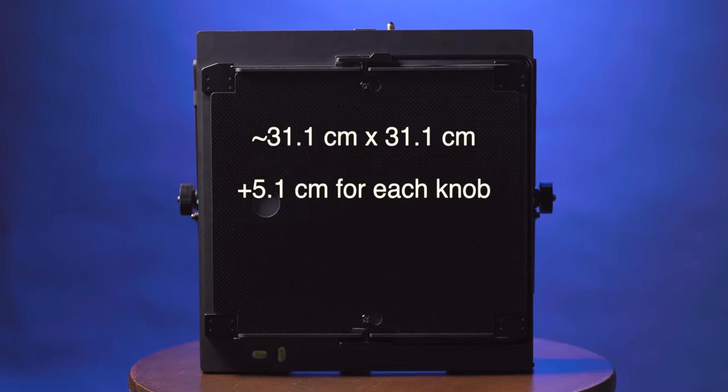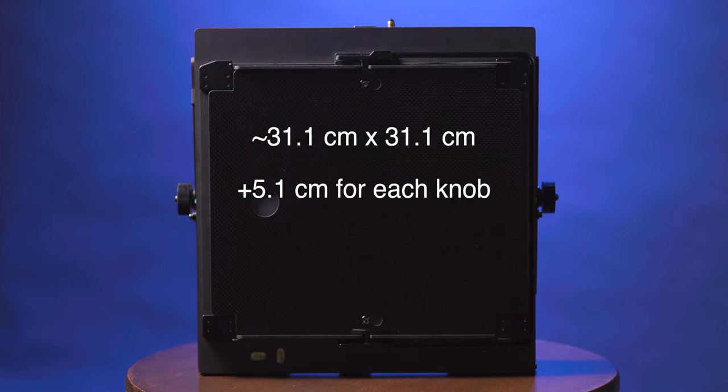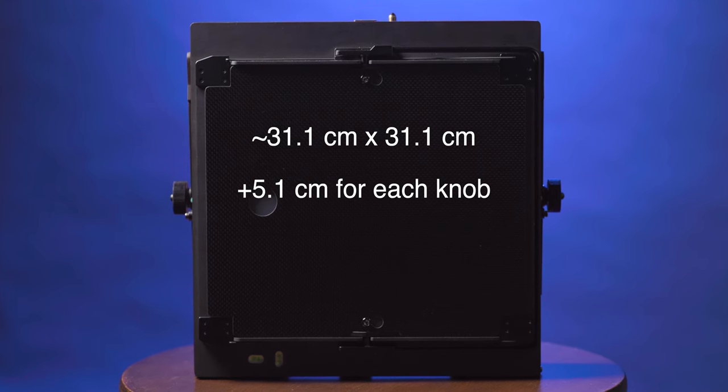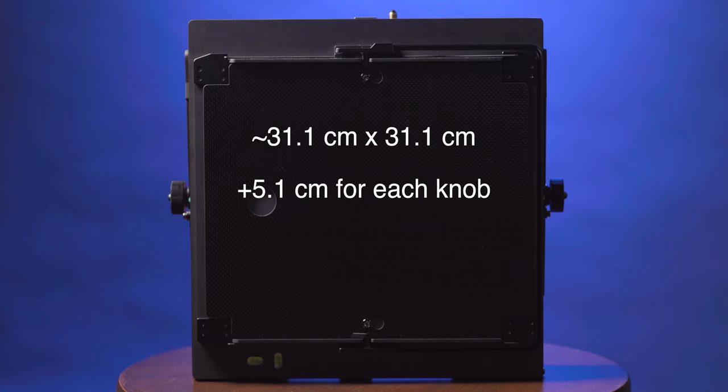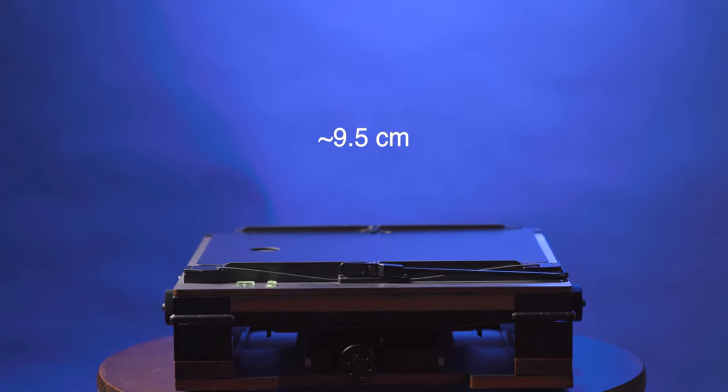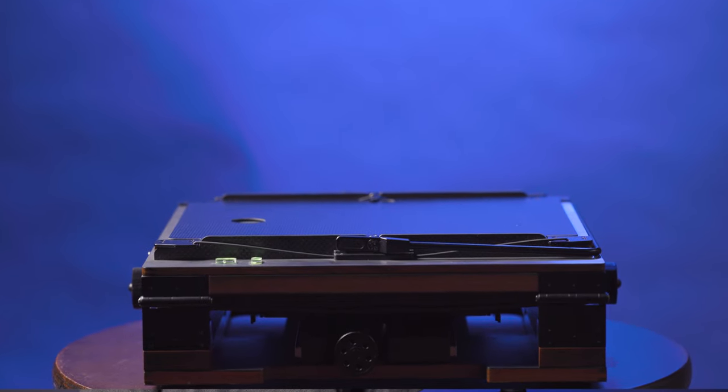The folded flat shaped dimensions of the camera make a perfect square at about 12.25 inches, not including the protruding rear standard lobs, which adds about two inches to one side. The folded thickness is about three and three quarters of an inch.